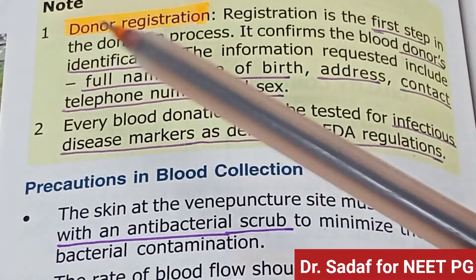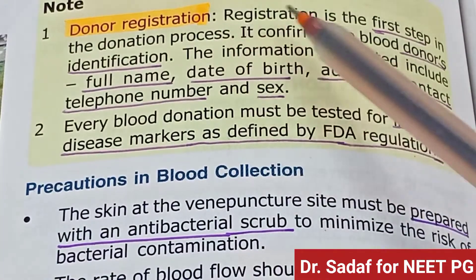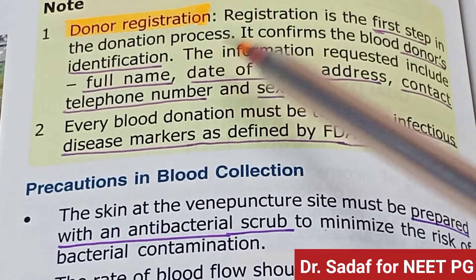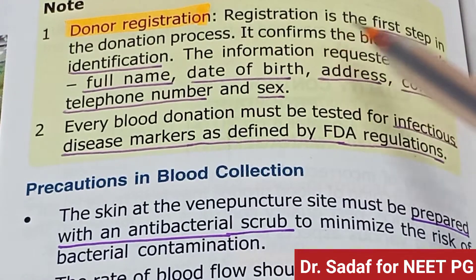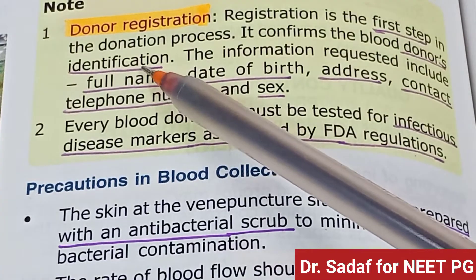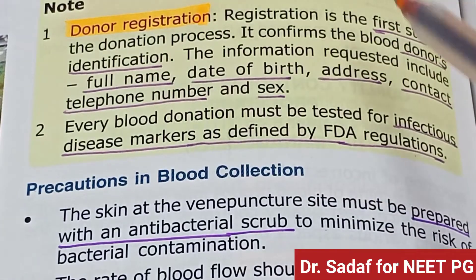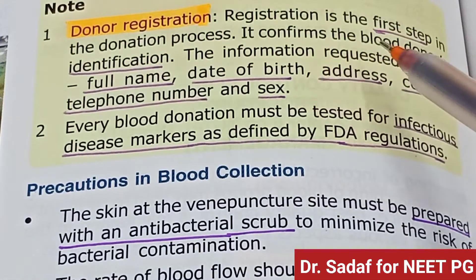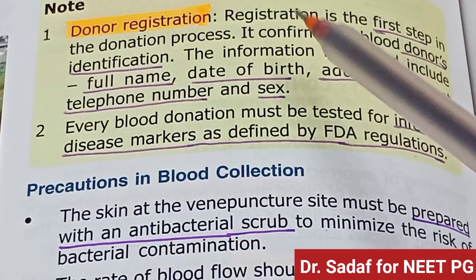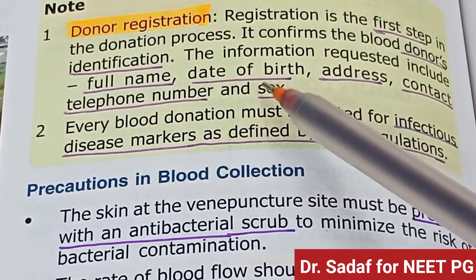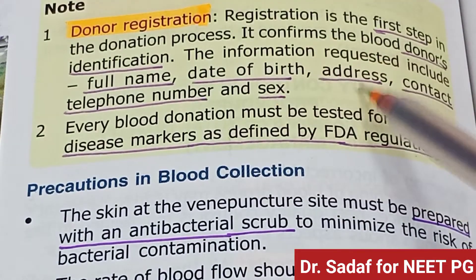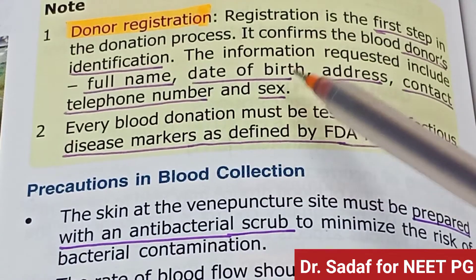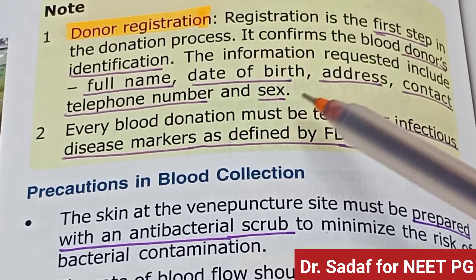Donor registration is the first step in the donation process. It confirms the blood donor's identification. Information requested includes the donor's full name, date of birth, address, contact telephone number, and sex.